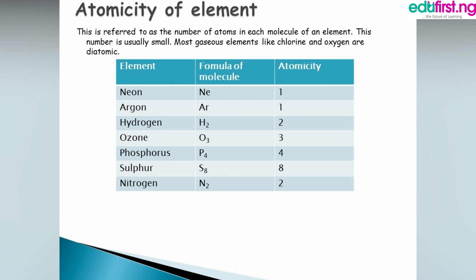Now let's move to atomicity of elements. Atomicity is referred to as the number of atoms in each molecule of an element. This number is usually small. Most gaseous elements are diatomic — including hydrogen gas, oxygen gas, and chlorine gas — meaning they always exist as two atoms and do not exist as a single atom.